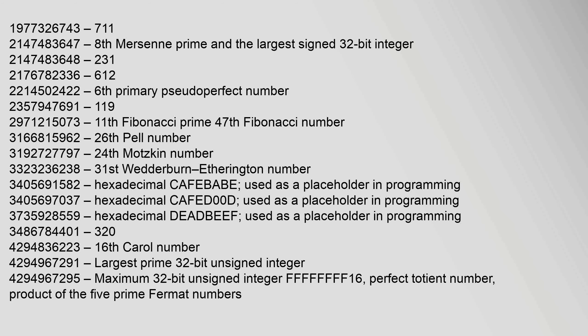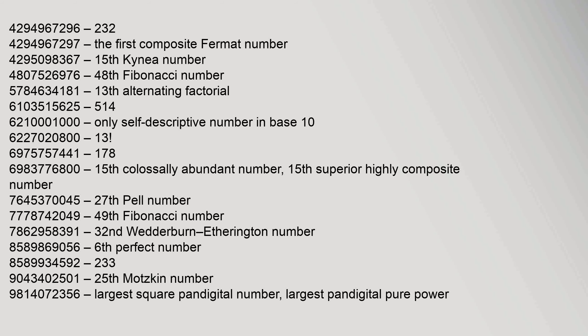4,294,967,291 — largest prime 32-bit unsigned integer; 4,294,967,295 — maximum 32-bit unsigned integer (0xFFFFFFFF), a perfect Totient number and product of the 5 prime Fermat numbers; 4,294,967,296 — 2 to the power of 32; 4,294,967,297 — the first composite Fermat number; 4,295,049,836 — 17th Kine number.